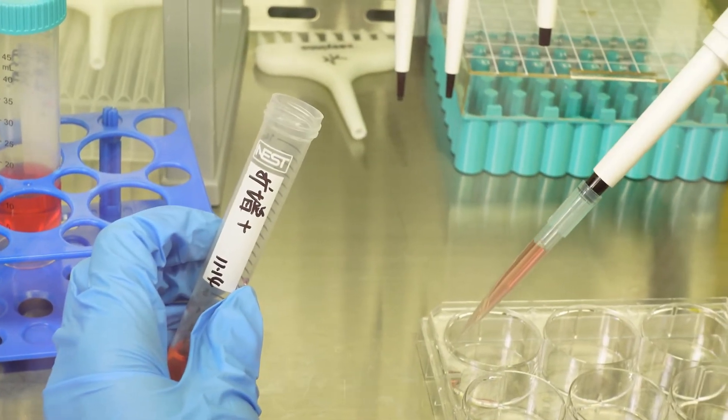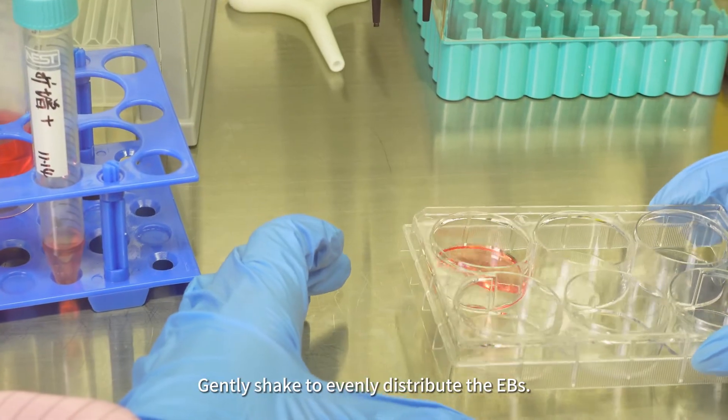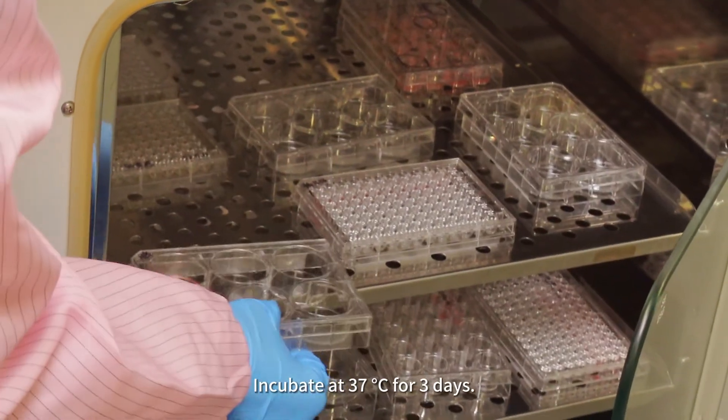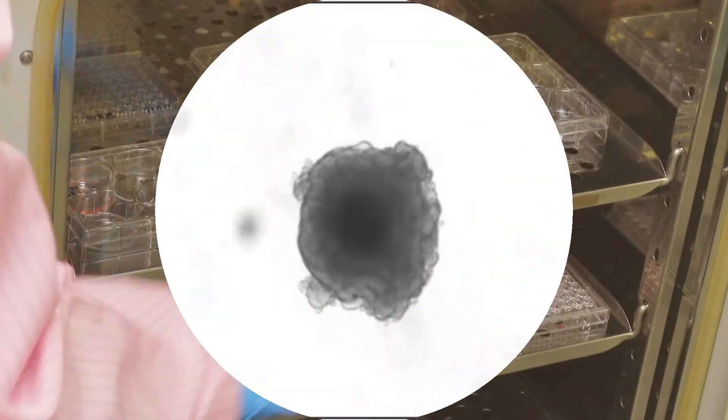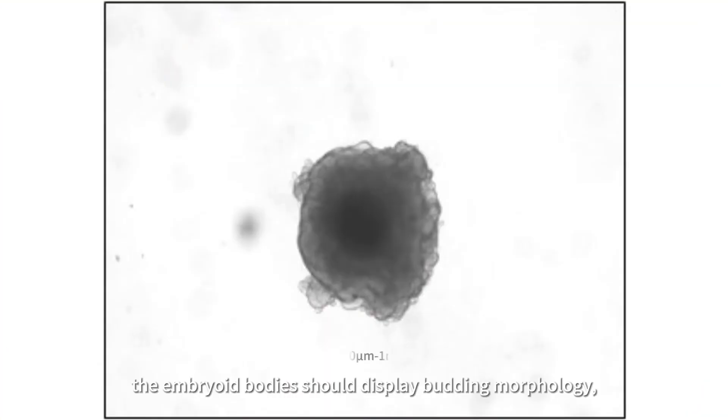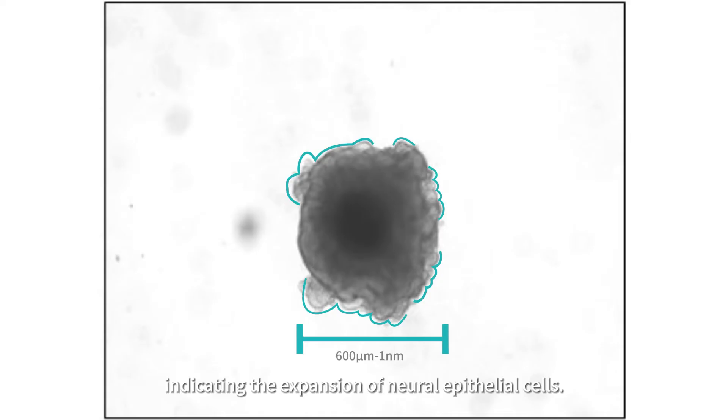Add expansion medium. Gently shake to evenly distribute the EBs. Incubate at 37 degrees Celsius for 3 days. Under a microscope, the embryoid bodies should display budding morphology, indicating the expansion of neural epithelial cells.